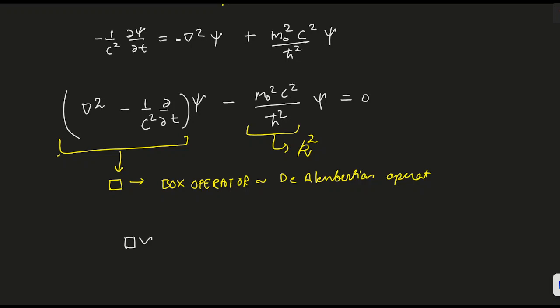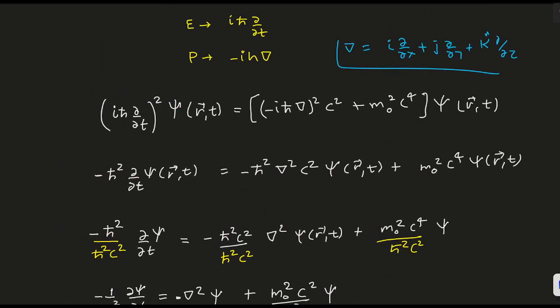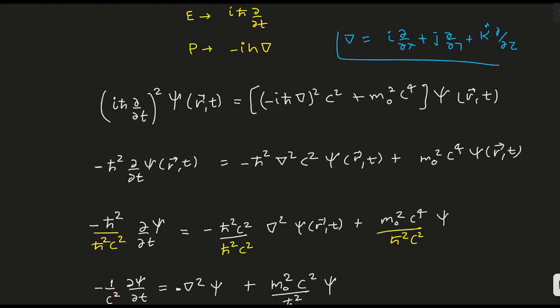What do you get? You will have box operator on ψ minus κ² ψ equals 0. This is nothing but the Klein-Gordon equation. So we have arrived at our result. In further videos we will see what are the shortcomings of this equation. That's all for today, thank you very much.